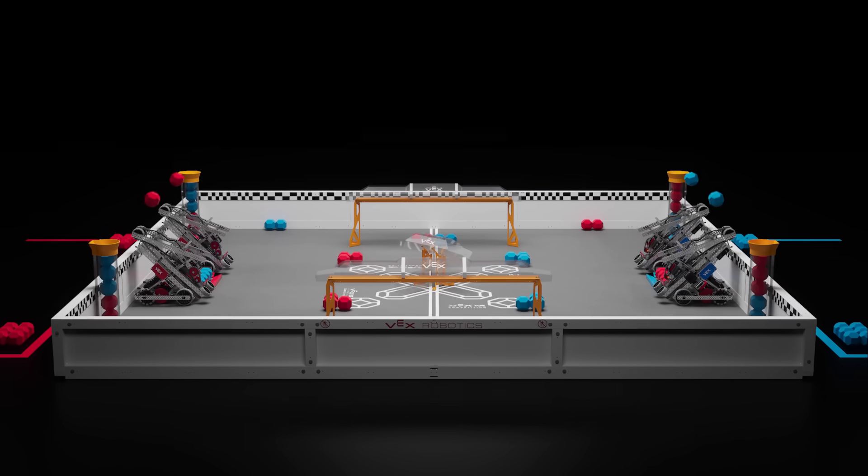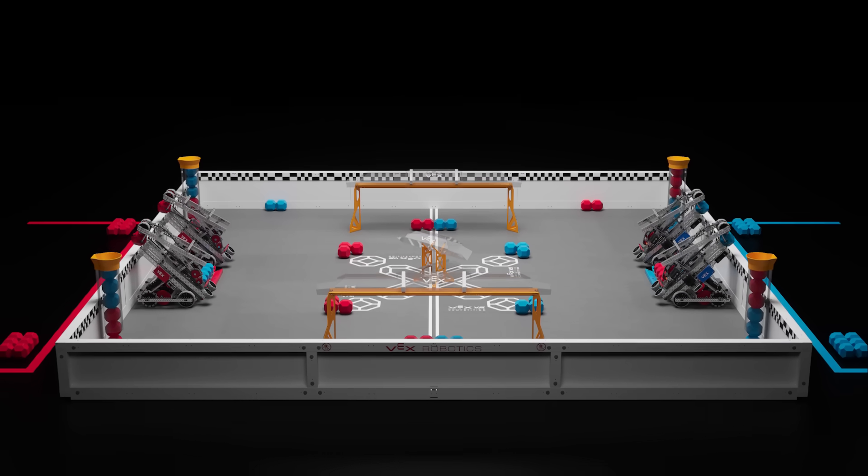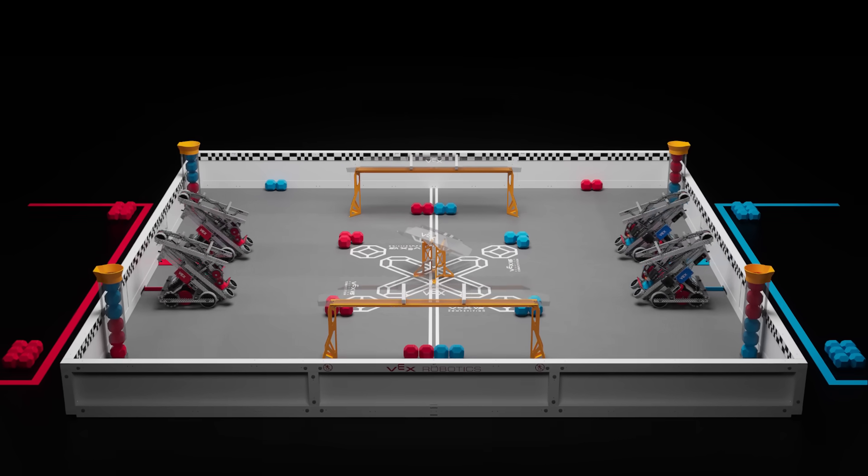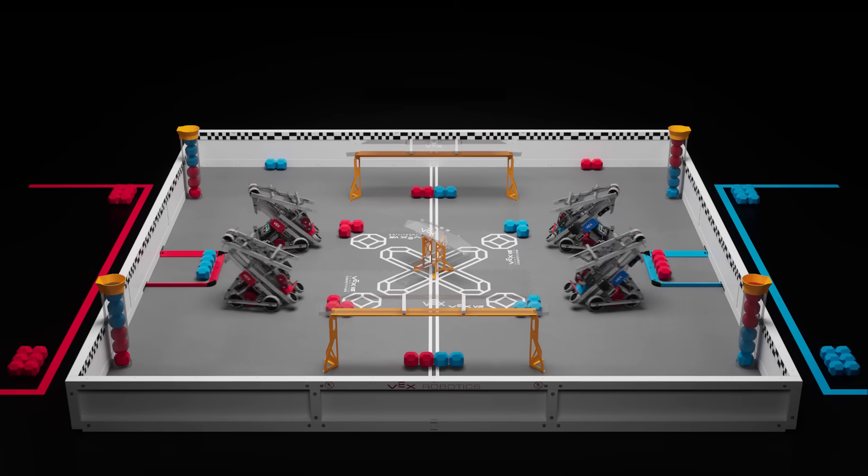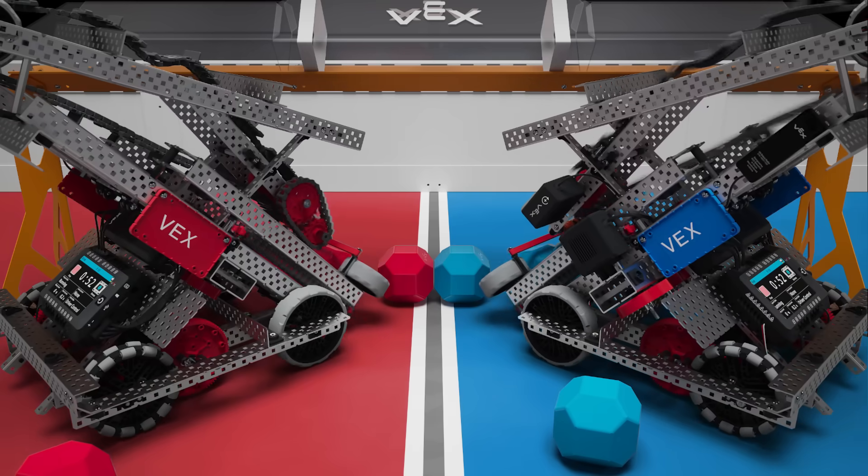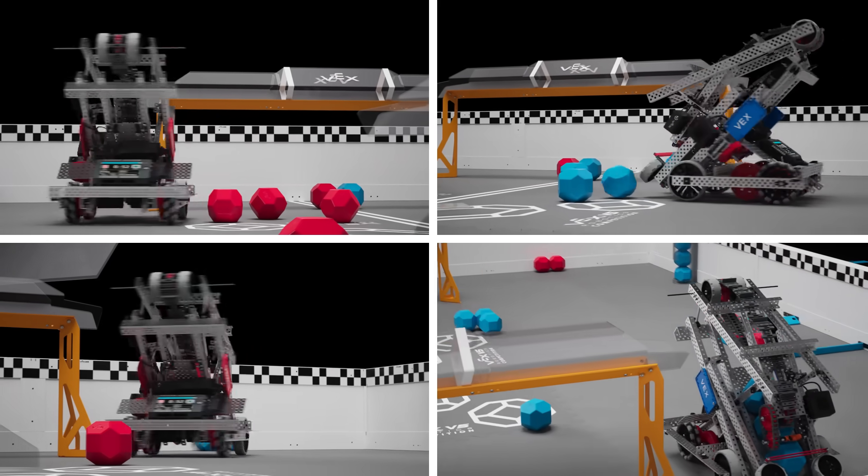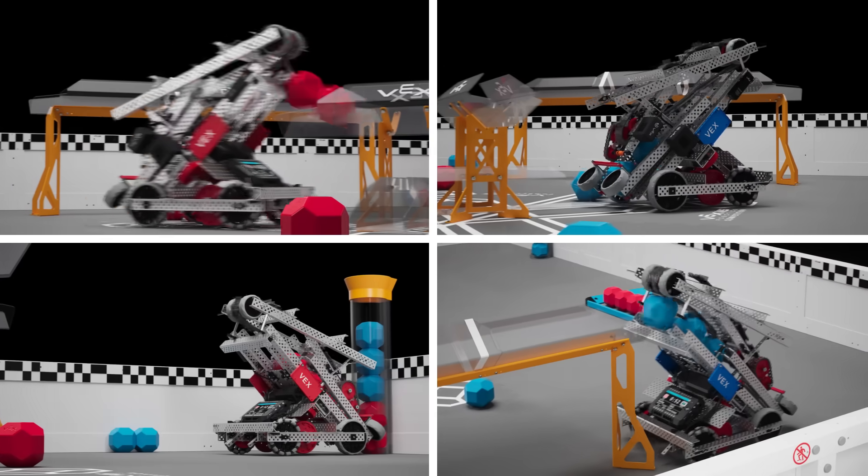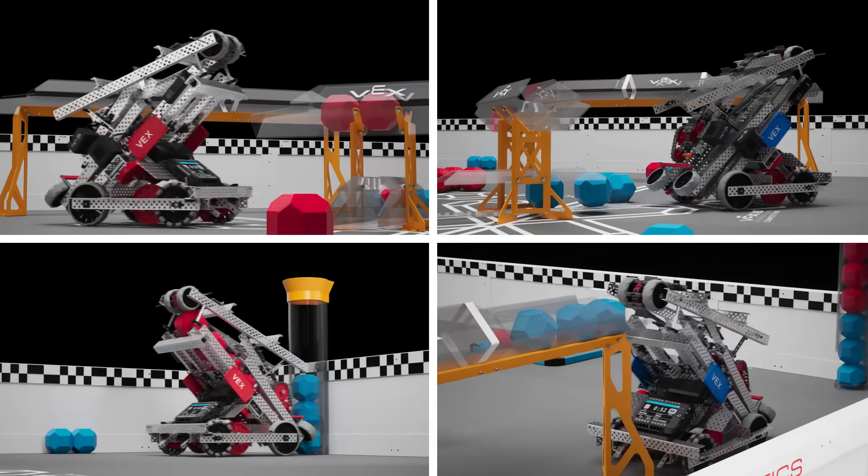All four robots must begin the match with one block as a preload. Matches begin with a 15-second autonomous period where robots operate without input from their drivers and must stay on their side of the autonomous line. Alliances have the opportunity to earn an autonomous win point by completing a specific set of tasks during the autonomous period.